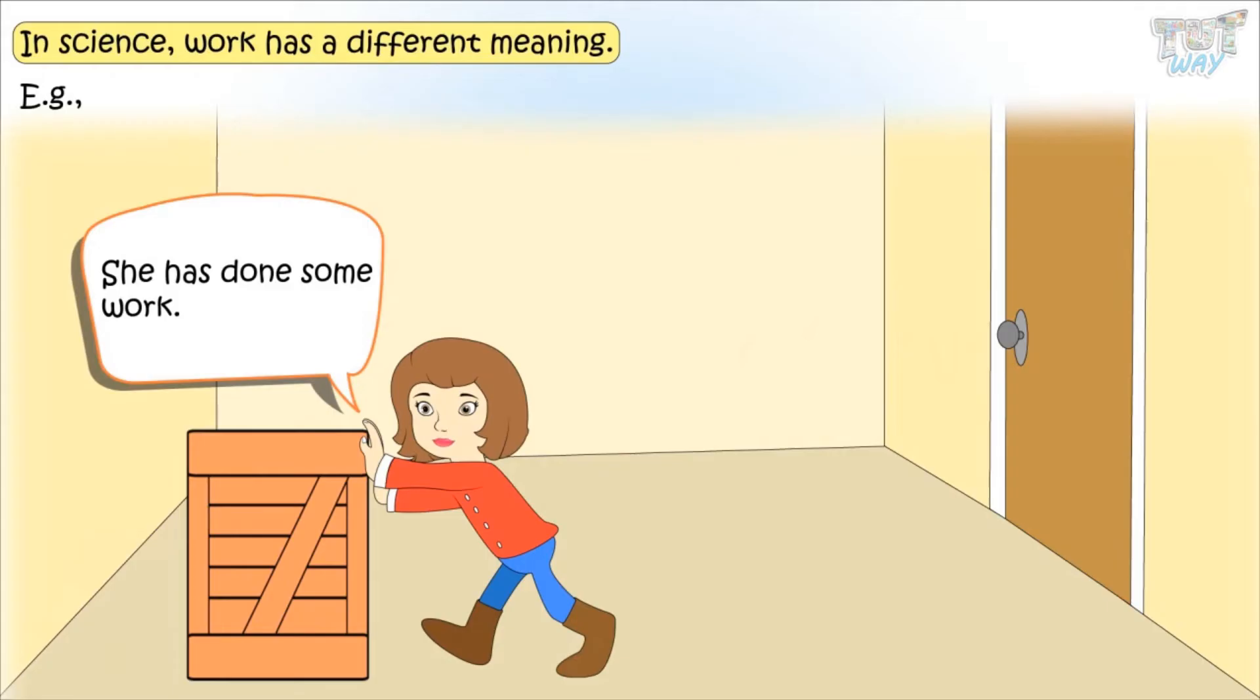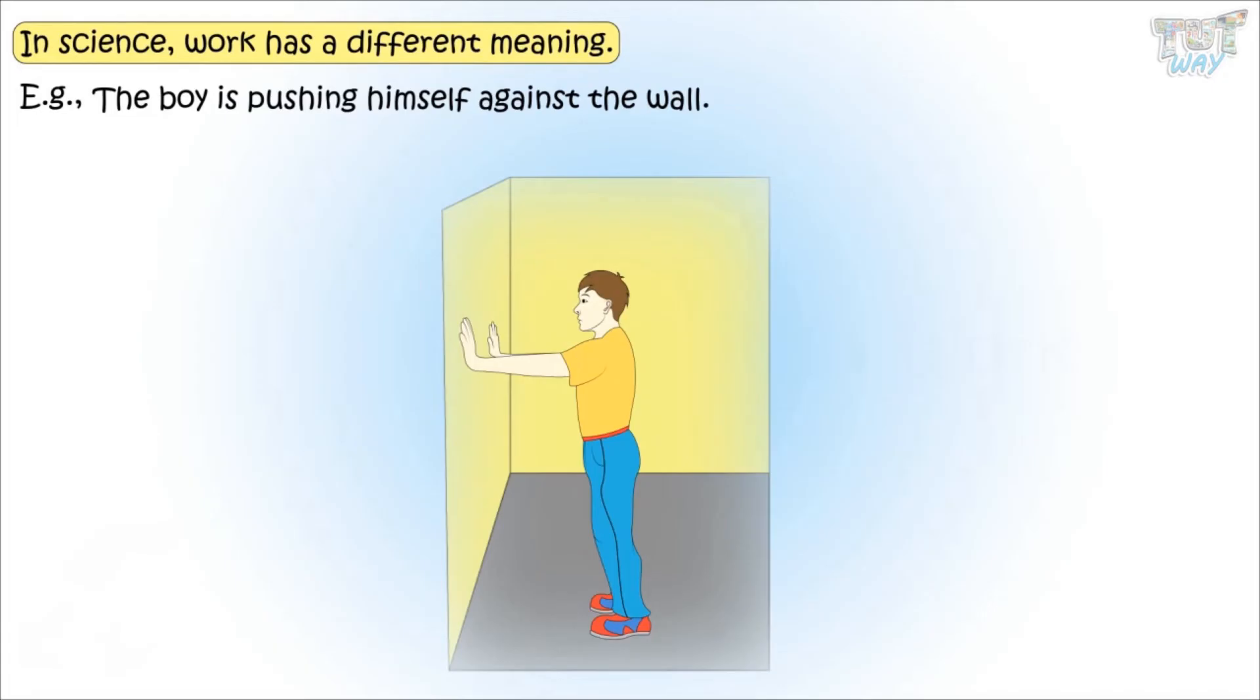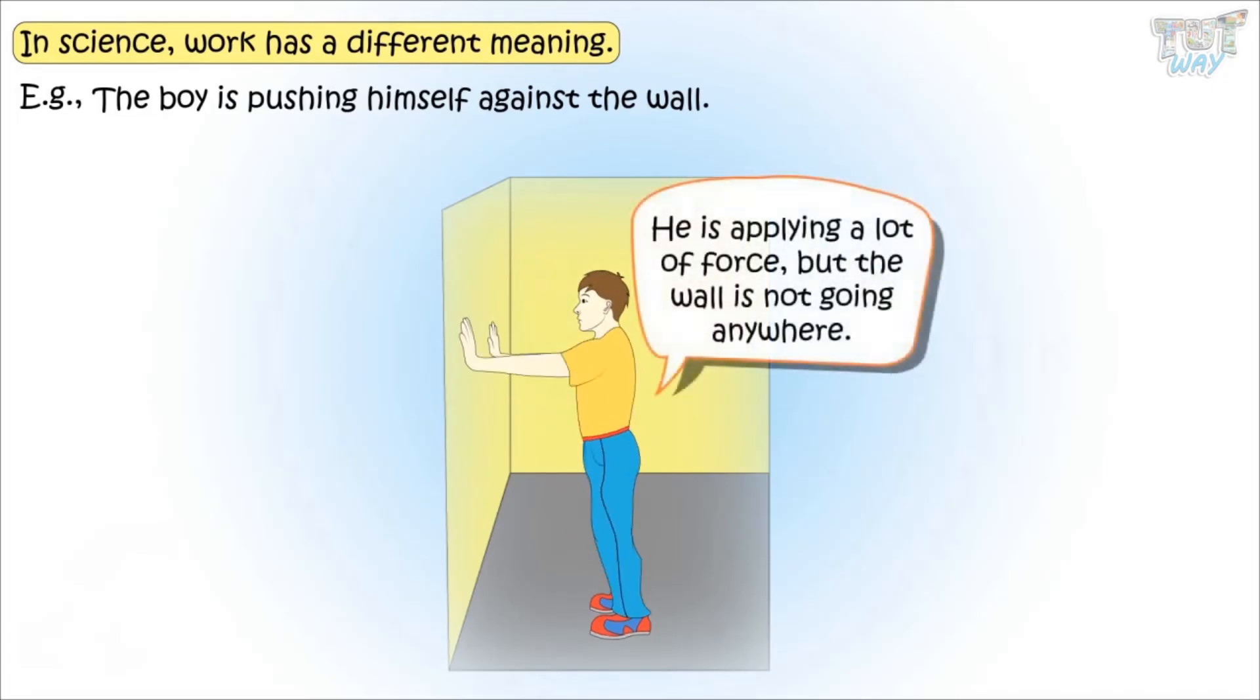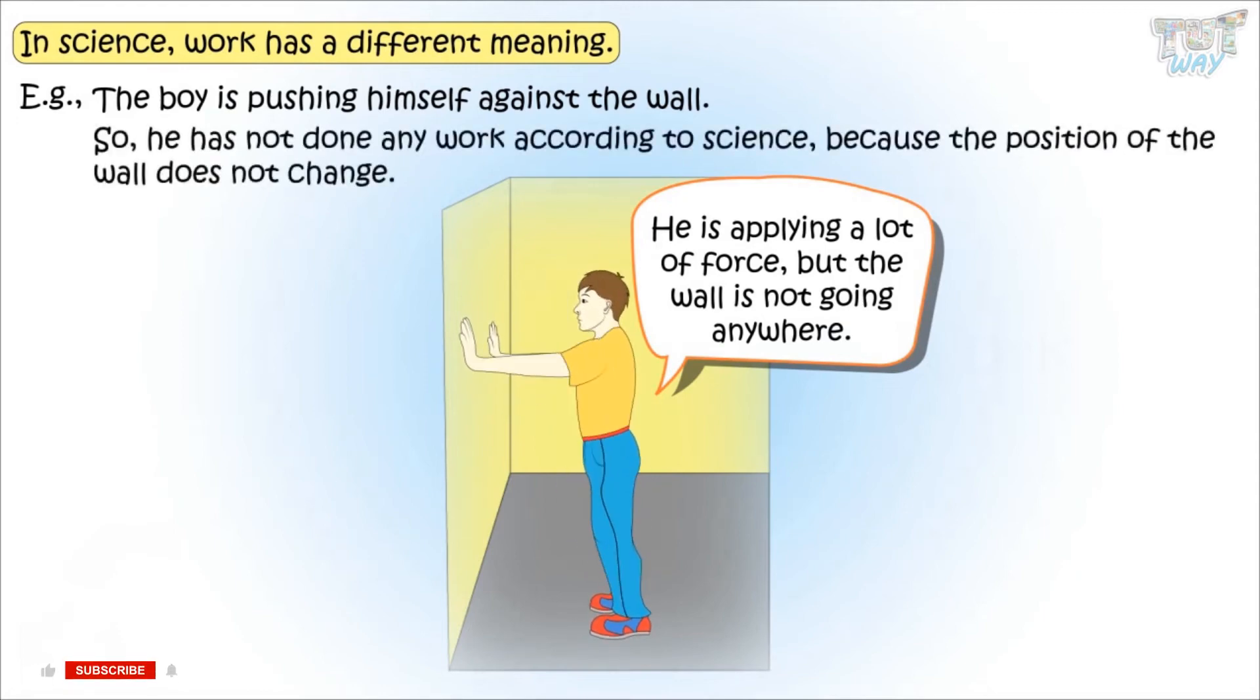Here is another example. Here, the boy is pushing against the wall. He is applying a lot of force, but the wall is not going anywhere. So, no work has been done, because the position of wall does not change here.